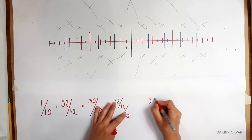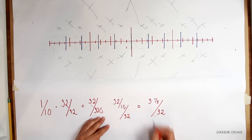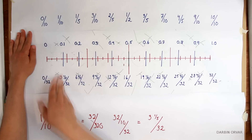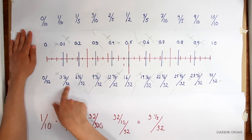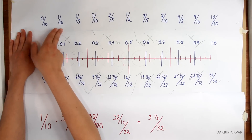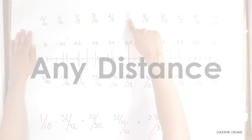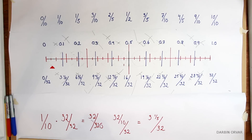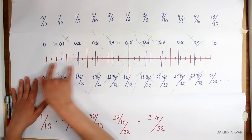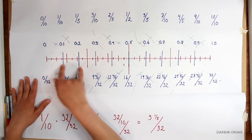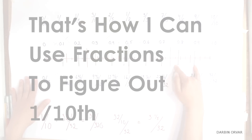And we can translate that into 3 and 1 fifth over 32. So that means every 3 and 1 fifth 32nds is 1 tenth of that distance — and that could be any distance. So we have 1 thirty-second, 2 thirty-seconds, 3 thirty-seconds and a fifth. And then we can add to that: 1 tenth, 2 tenths, and so forth. That's how I can use fractions to figure out what 1 tenth of a distance is.